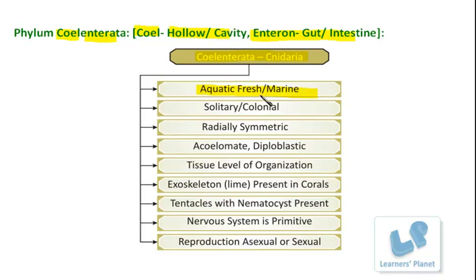Besides the habitat feature, these organisms can be either solitary or colonial. Solitary means as a single individual in an independent way, or they may live as a colony — in a group, living together. Depending on this, they can be free living or sedentary. For example, hydra is a solitary, free-living organism. On the other hand, corals also belong to Coelenterata but they are colonial and sedentary.